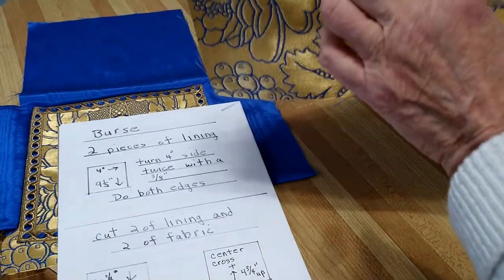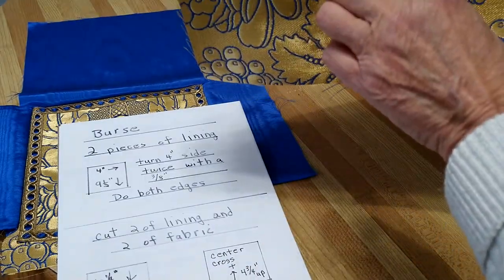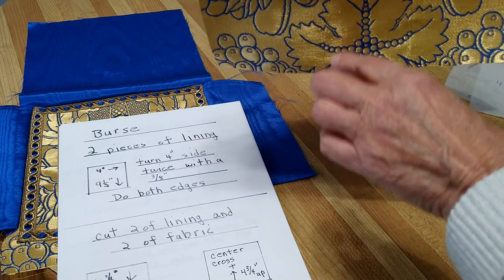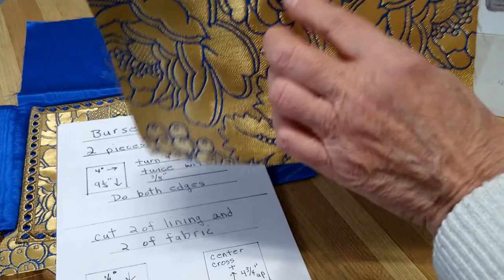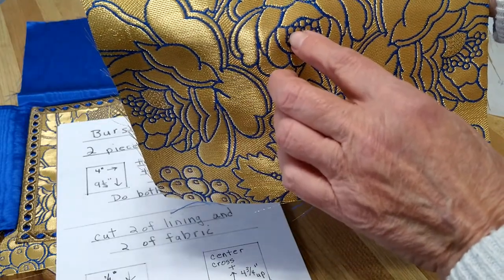When you figure out the cross, you do the cross four and three quarter inches from the bottom and you center your cross right there.